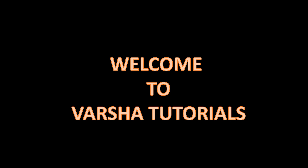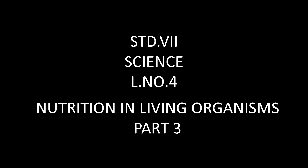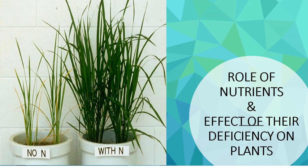Hello dear students, welcome to Varsha Tutorials. Today in Part 3 of nutrition in living organisms, we are going to study the role of nutrients and effect of their deficiency on plants. Role means function or work, and deficiency means less in amount. So in this lesson, we are going to study the function or work of nutrients and the effect — that is, what will happen if a particular nutrient is less in plants.